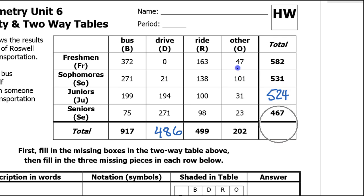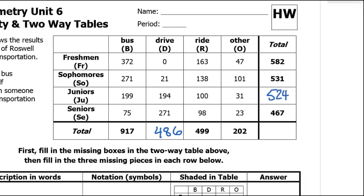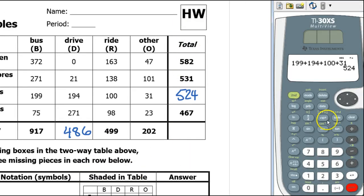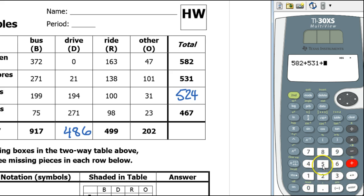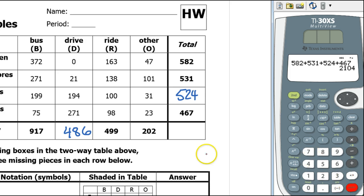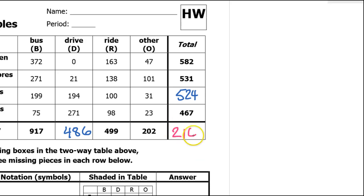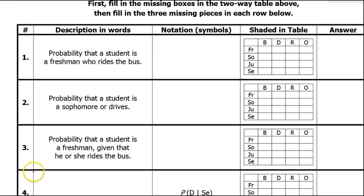Now if I want to calculate the total number of people, I could either add up all of the freshmen, sophomores, juniors, and seniors, or I can add up all the people who ride a bus, drive themselves, ride with others, or take other transportation. Either way, that should give me the total number of people. So I'll add up the vertical column: 582 plus 531 plus 524 plus 467 — that's 2,104. Now we're all set.